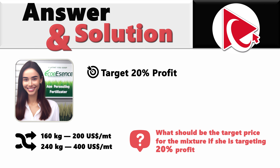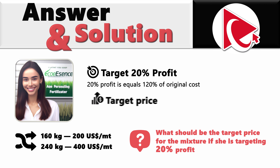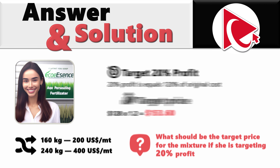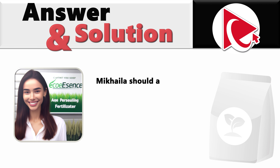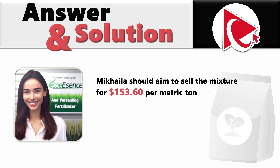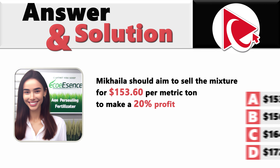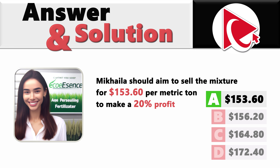The best way to add 20% profit is to understand that 20% profit equals 120% of the original cost, which means the target price can be calculated as $128 multiplied by 1.2, and the end result would be $153.60. So Mikaela should aim to sell the mixture for $153.60 per metric ton to make a 20% profit. The correct answer here is Choice A: $153.60.